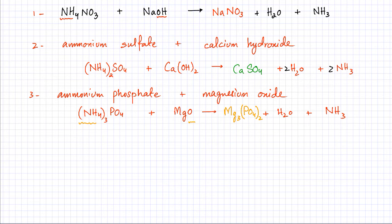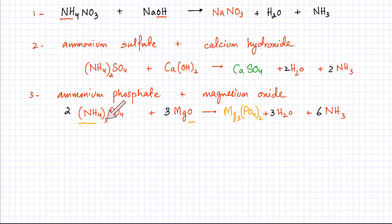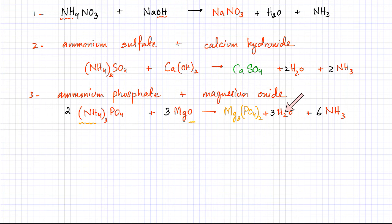To balance the equation, start with magnesium: there are 3 magnesiums in the salt, so there should be 3 MgO on the left. There are 2 phosphate ions in the salt but only 1 phosphate per ammonium phosphate formula unit, so there should be 2 molecules of ammonium phosphate — making 6 ammonia gas molecules. Counting oxygens: 8 in 2×(NH4)3PO4 plus 3 in 3×MgO equals 11; and 8 in Mg3(PO4)2 plus 3 in 3×H2O also equals 11. Hydrogens: 24 on each side. Everything is balanced.